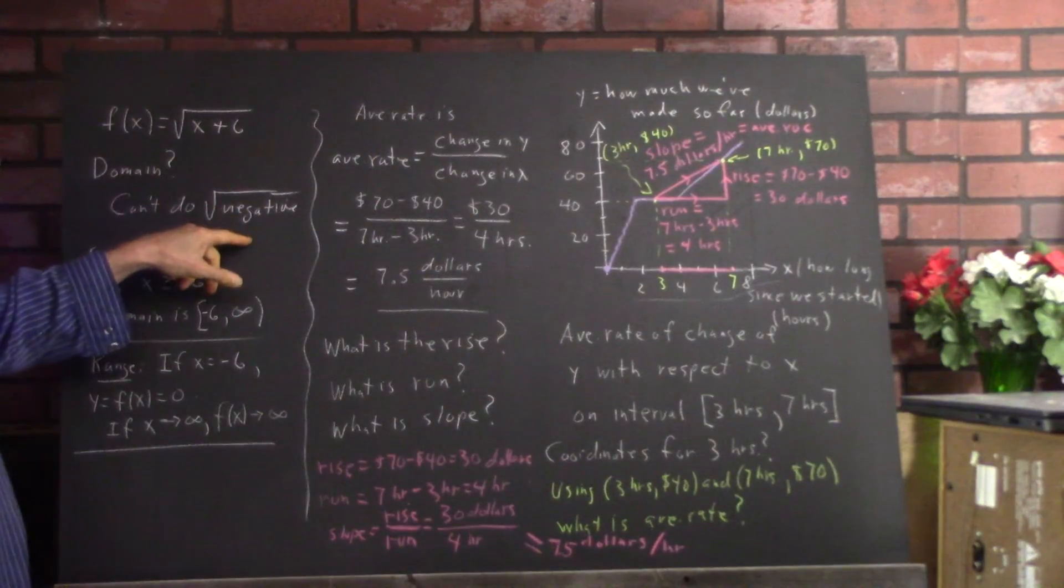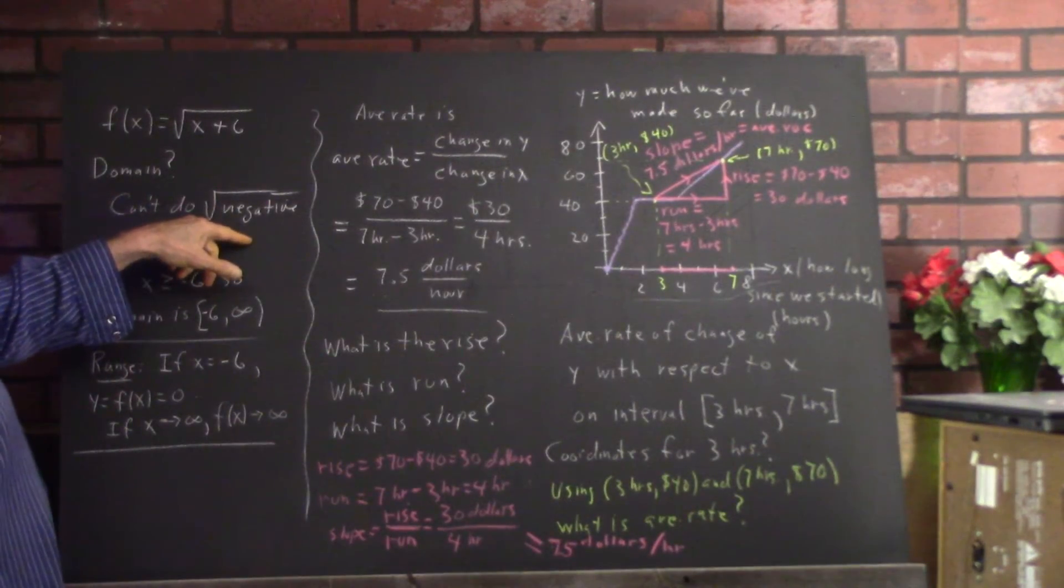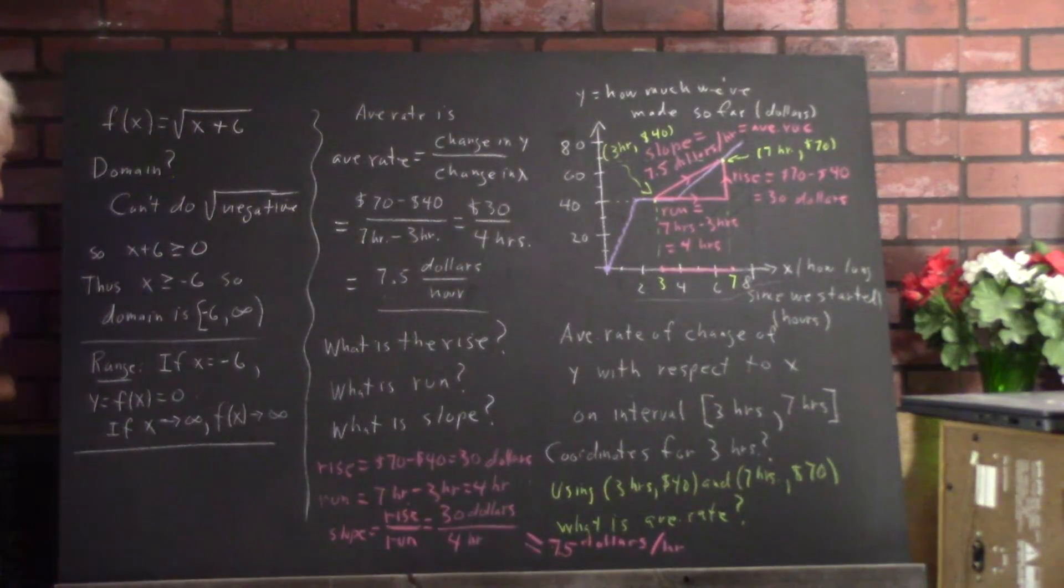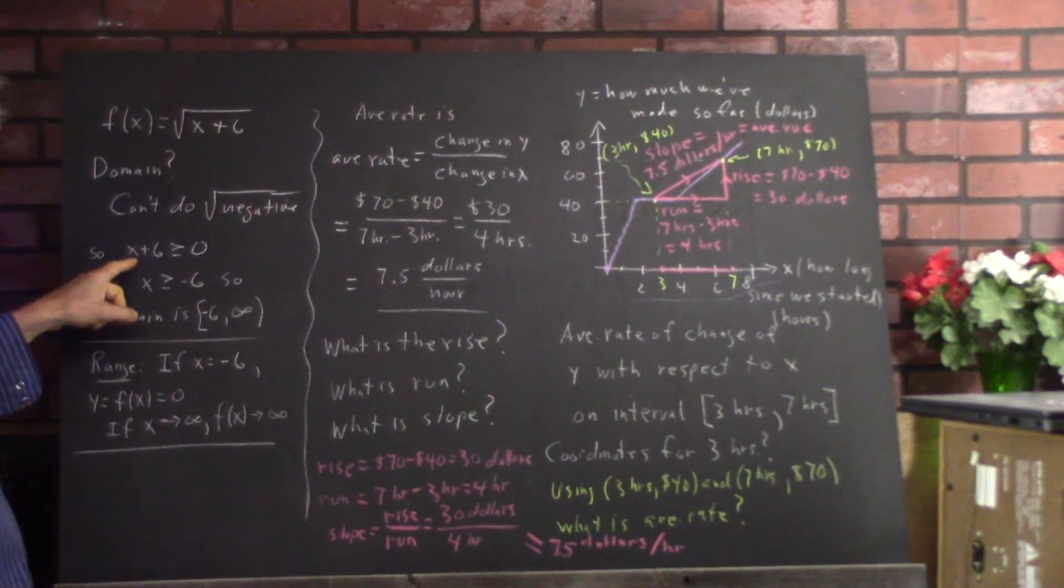You can do the square root of a negative if you're working with complex numbers. Anyhow, with real numbers, if everything is supposed to be real, it can't happen.